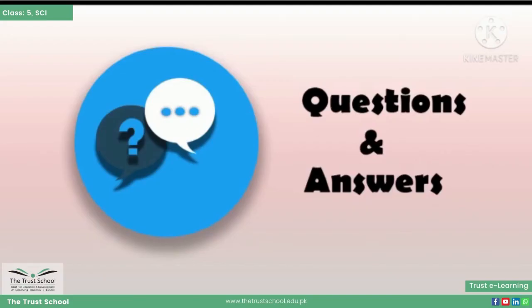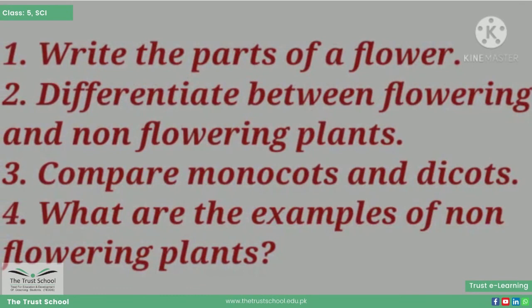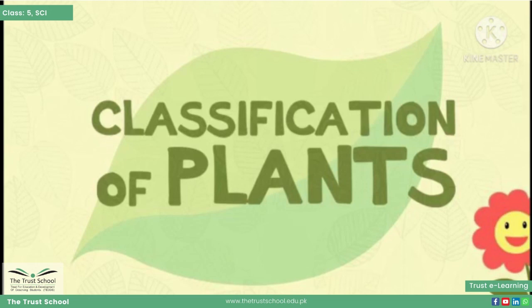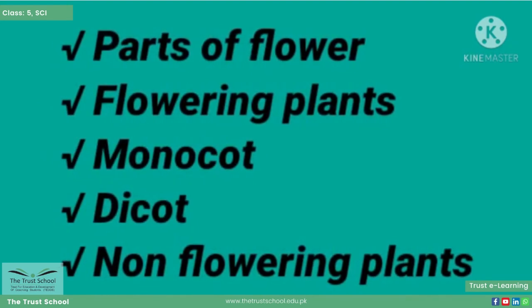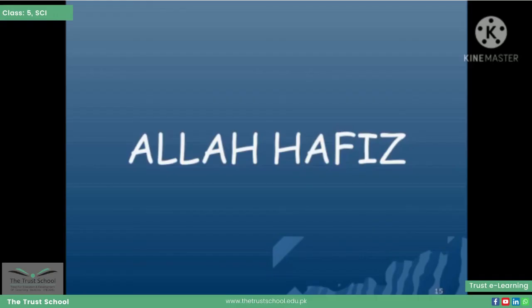At the end, here are some questions that you have to write down in your science notebook. First: what are the parts of a flower? Second: differentiate between flowering and non-flowering plants. Third: compare monocots and dicots. And the last one: what are the examples of non-flowering plants? In today's topic we studied the classification of plants, parts of the flower, flowering plants, monocots, dicots, and non-flowering plants. I hope everything is clear. That's all for today — see you next time, Allah Hafiz.